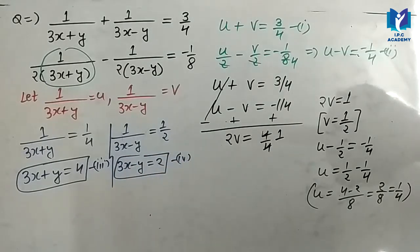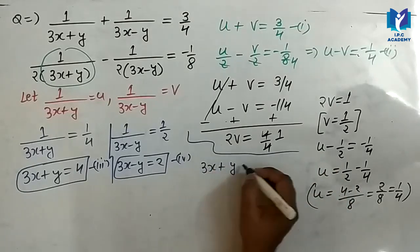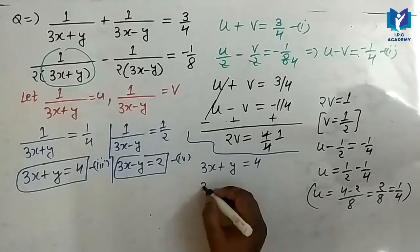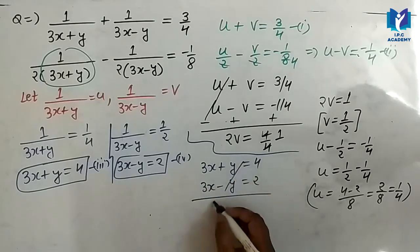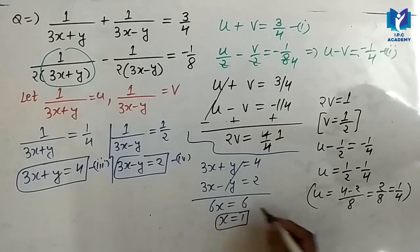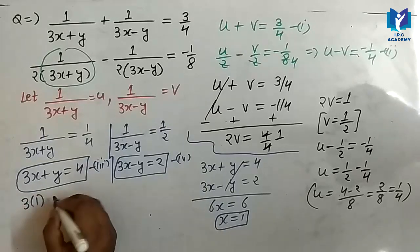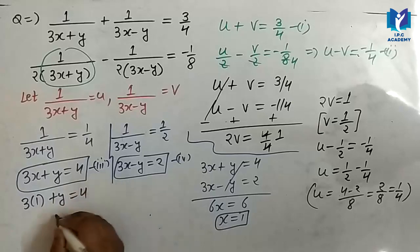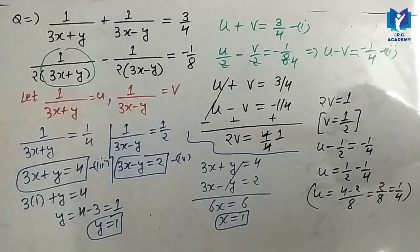इन दोनों equation को add करा लो. 3x plus y is equal to 4, and 3x minus y is equal to 2. add कराने पर y part cancel हो जाएगा. यहाँ आएगा 6x equal to 6. x की value आपके पास 1 बनेगी. जैसे x की value 1 बनाएगी, किसी में भी put करेंगे. आएगा 3 into 1 plus y is equal to 4. यहाँ पर आएगा 4 minus 3, which is 1. y की value मेरे पास आएगी 1.